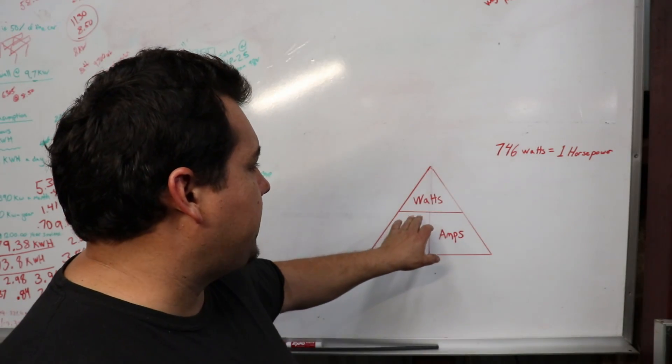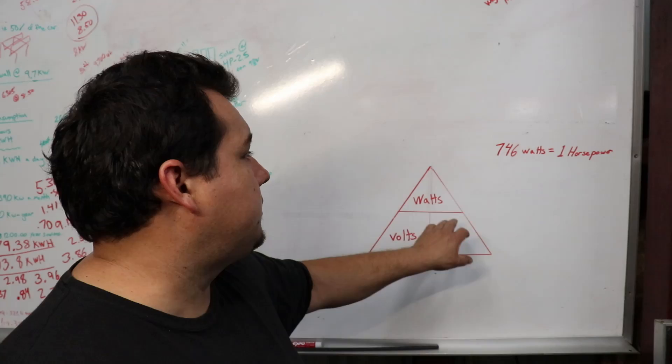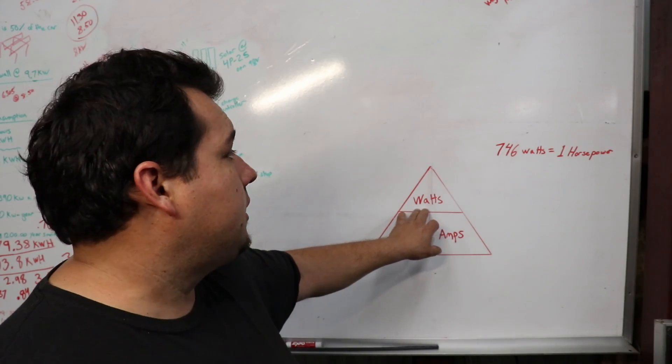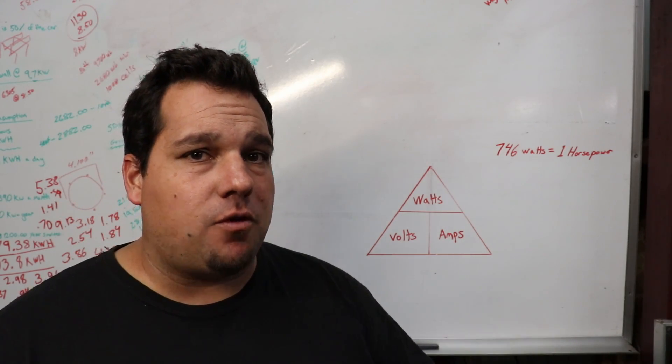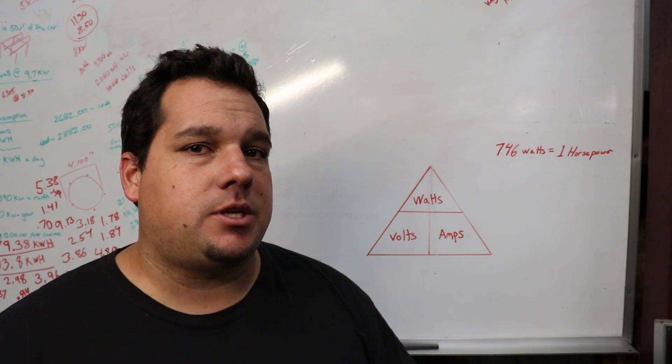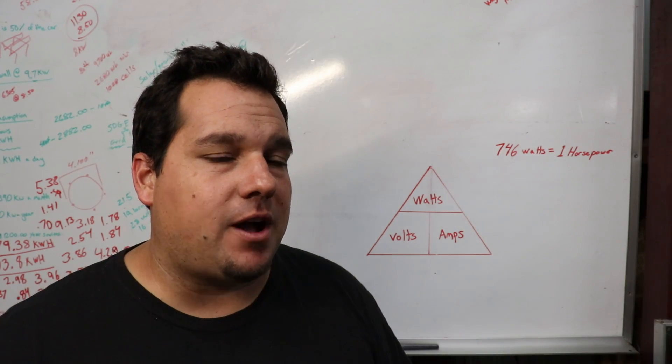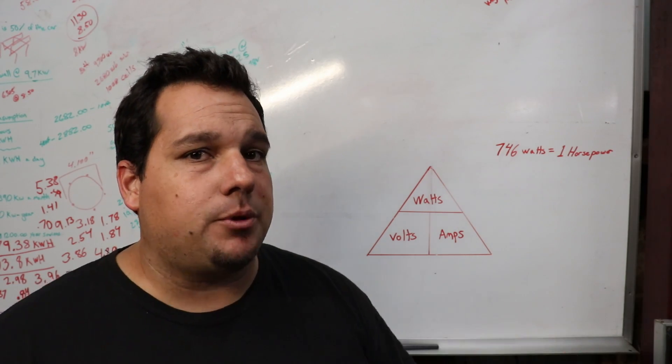So to be able to get wattage, you simply take volts times amps to give you your watts. And for an example, if you take a 50-volt motor and you times it by 10 amps, that would be a 500-watt motor, and that's simply all it means.